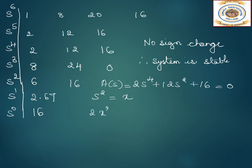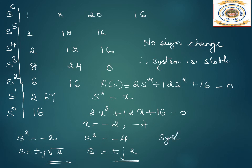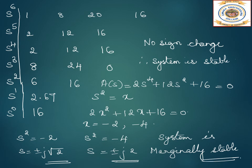Substituting x = s², the equation becomes 2x² + 12x + 16 = 0. The roots are x = −2 and x = −4. So s² = −2 gives s = ±j√2, and s² = −4 gives s = ±j2. We have four roots lying on the imaginary axis. Therefore the system is marginally stable, with non-repeated roots on the imaginary axis.